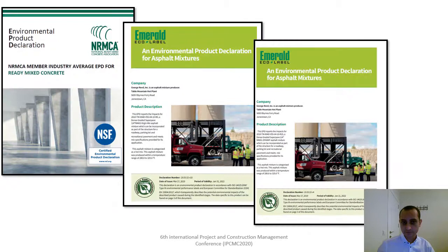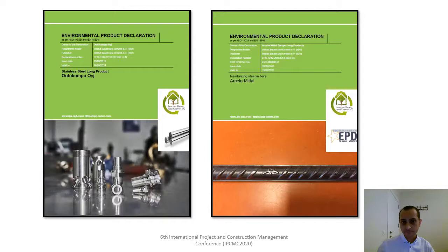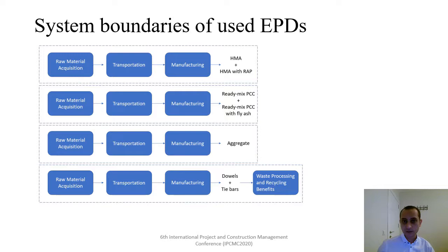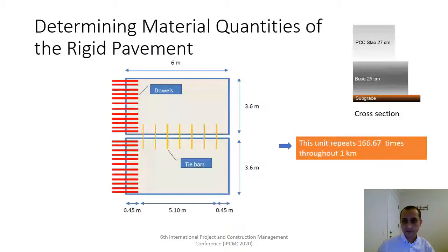You can see a close look at the EPDs for concrete, hot asphalt mixtures, aggregates, tie bars, and dowel bars. As an example, you can see the system boundaries. The EPD includes raw material supply, transport, manufacturing, waste processing, and recycling phases. You can also see the other EPD system boundaries for dowels and tie bars, as well as EPDs for asphalt, concrete, and aggregates used in determining material quantities of the rigid pavement.